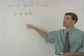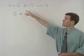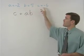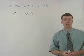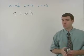In this problem, we're going to evaluate C plus AB, knowing that A equals negative 2, B equals 5, and C equals negative 6.